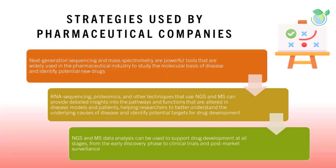Strategies used by pharmaceutical companies: Next-generation sequencing (NGS) and mass spectrometry (MS) are powerful tools widely used in the pharmaceutical industry to study the molecular basis of disease and identify potential new drugs. RNA sequencing, proteomics, and other techniques that use NGS and MS can provide detailed insights into the pathways and functions that are altered in disease models and patients, helping researchers to better understand the underlying causes of disease and identify potential targets for drug development.